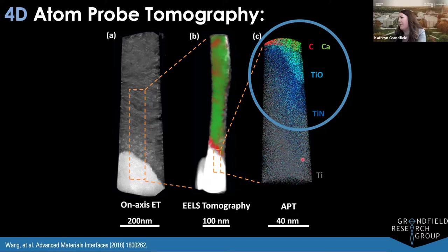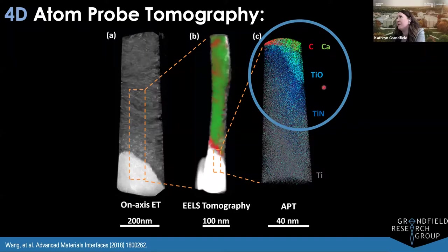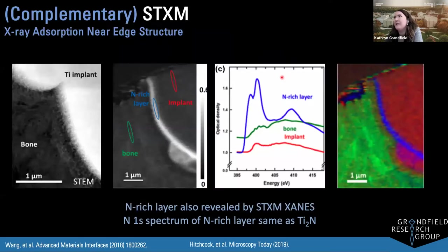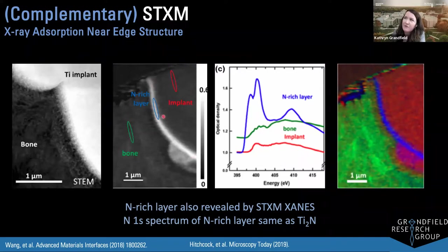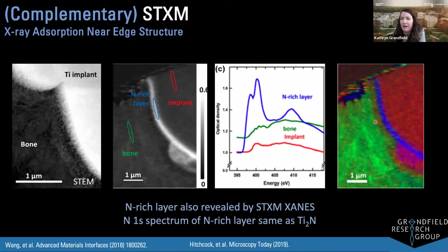The atom probe tomography results show the titanium implant at the bottom with calcium and carbon from bone — our hydroxyapatite and mineral. At the interface we see the titanium oxide layer as expected. But what was really interesting is we also noted a nitride layer underneath the oxide layer on the implant surface. Working with Adam Hitchcock doing complementary studies at the light source using STXM confirmed the presence of this nitrogen-rich layer underneath the oxide layer at the implant interface.